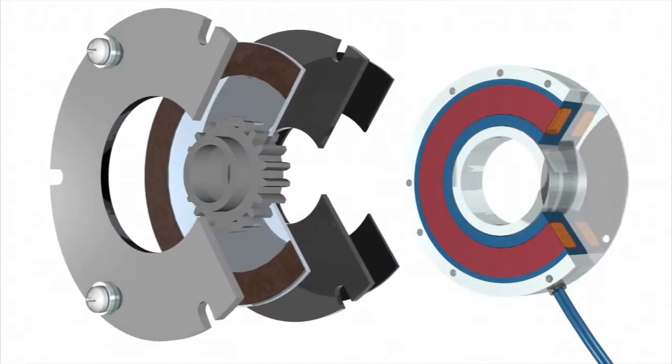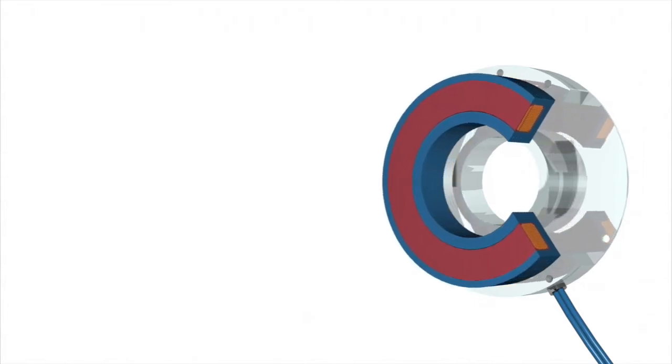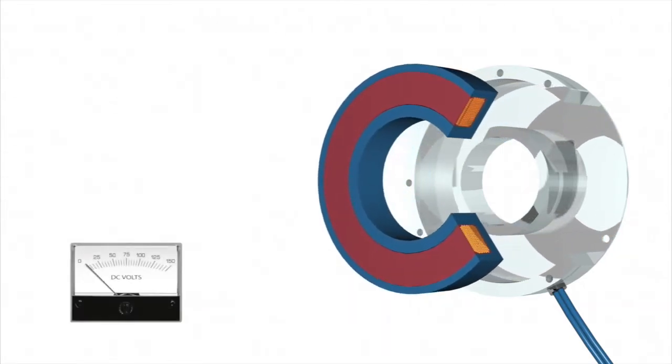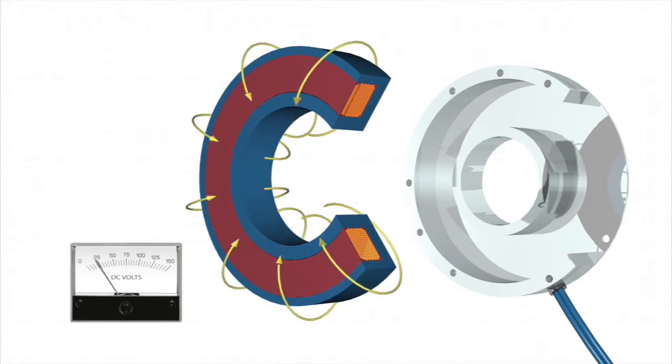Spring applied brakes transmit torque via spring pressure and use an electromagnetic field to release the spring pressure. Brakes are engaged mechanically and disengaged electrically.